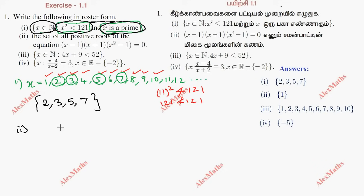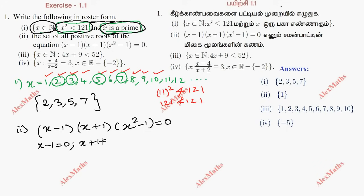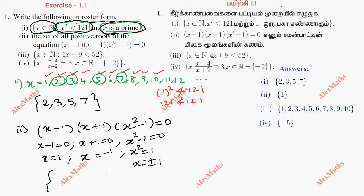Now for subdivision 2, we find the set of all positive roots. The factors are x minus 1, into x plus 1, into x squared minus 1 equal to 0. Setting each factor to zero: x minus 1 equals 0 gives x equals 1; x plus 1 equals 0 gives x equals minus 1; x squared equals 1 gives x equals plus or minus 1. So the set of all positive roots of the equation x squared equal to 1 is found.